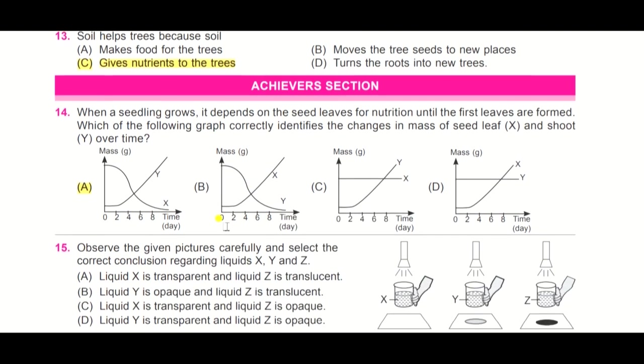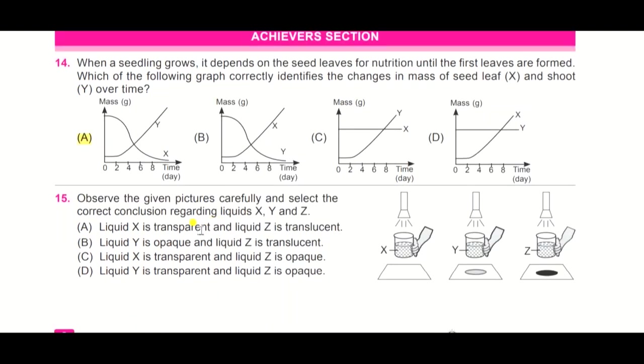Last question for today, children. Observe the given pictures carefully and select the correct conclusion regarding liquids X, Y, and Z. You need to observe this picture very carefully. This is X, this is Y, and this is Z. Option A, liquid X is transparent and liquid Z is translucent. B, liquid Y is opaque and liquid Z is translucent.